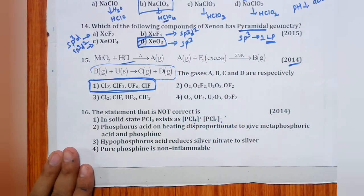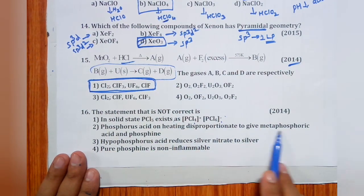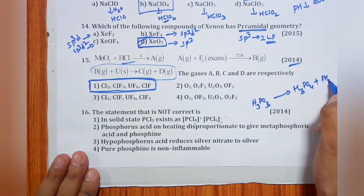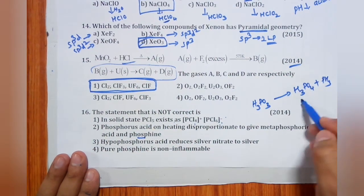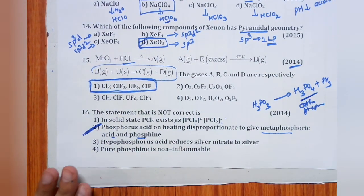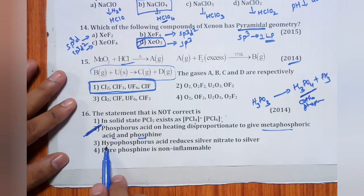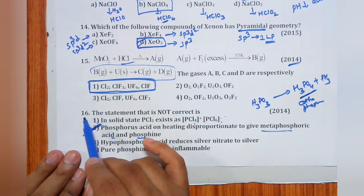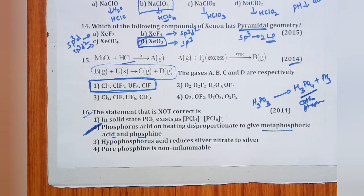Question 16 (last question): Which statement about P-block is not correct? Solid PCl5 exists as [PCl4]+ and [PCl6]− and conducts electricity — correct. Phosphorous acid (H3PO3) on heating disproportionates to give H3PO4 and PH3 — but the claim that H3PO4 is metaphosphoric acid is wrong; it is orthophosphoric acid. Hypophosphorous acid reduces AgNO3 to Ag — correct. Pure phosphine is non-inflammable — correct. Answer is (2).